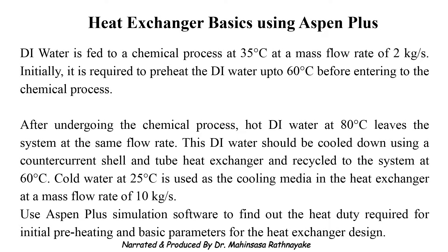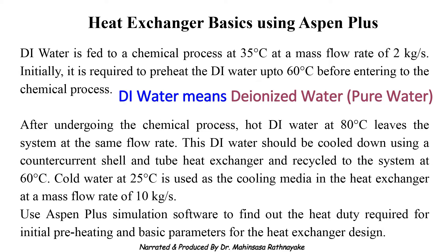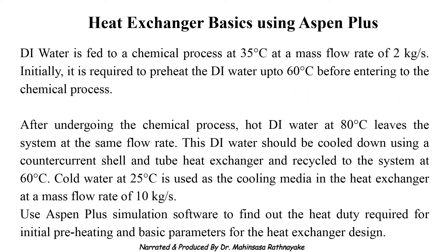This is our example problem. DI water is fed to a chemical process at 35 degrees Celsius at a mass flow rate of 2 kilograms per second. It is required to preheat the DI water up to 60 degrees Celsius before entering the chemical process. After undergoing the chemical process, hot DI water at 80 degrees Celsius leaves the system at the same flow rate.